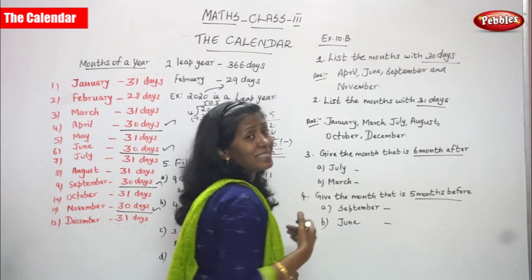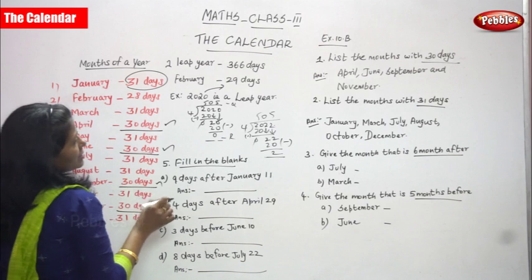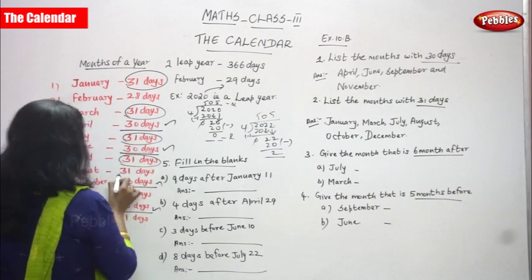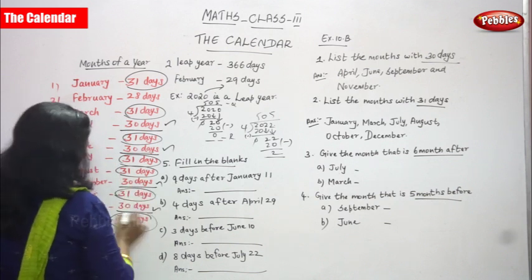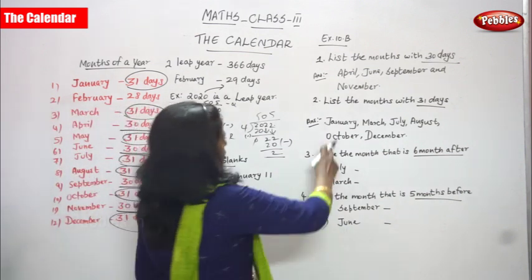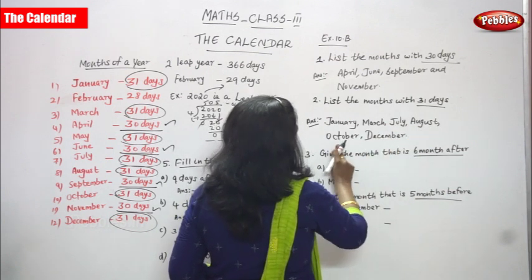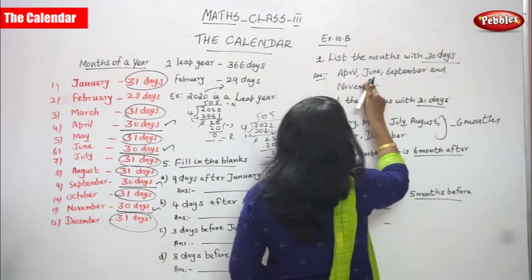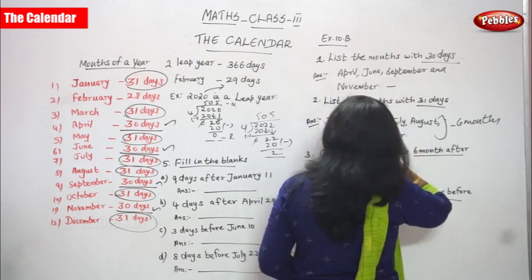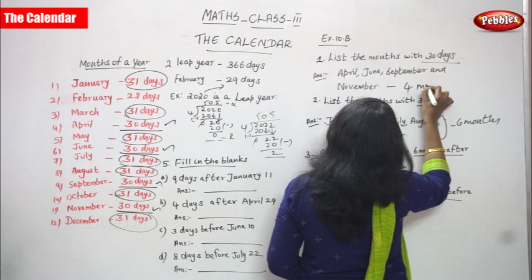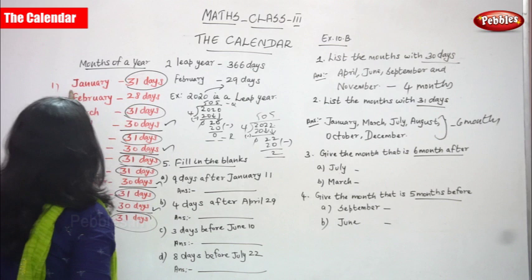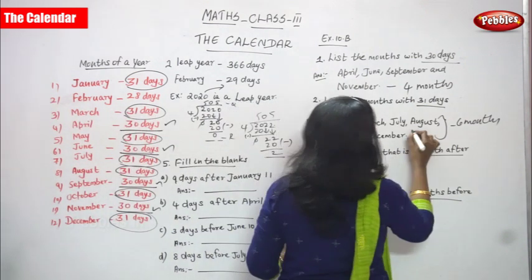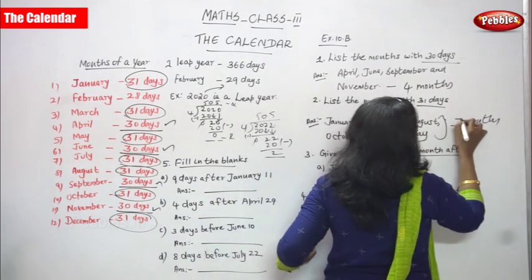Next: list the months with 31 days. The months with 31 days are January, March, May, July, August, October, and December. That is 7 months in total. Note: May was initially missed but must be included, making the total 7 months with 31 days.